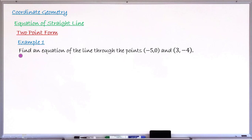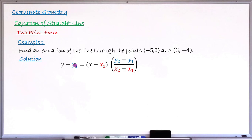Example number one: find an equation of the line that passes through the point with coordinate (−5, 0) and the second point with coordinate (3, −4). The question asks us to find the equation of that line. The solution: we write down the formula — y minus y₁ equals, in the first bracket, x minus x₁, times another bracket containing the fraction y₂ minus y₁ over x₂ minus x₁.